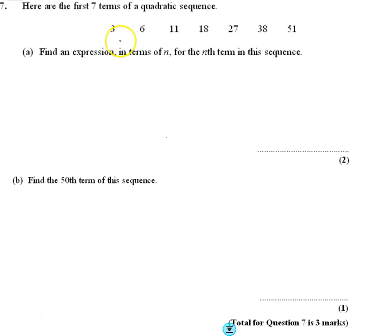Question number 7. Here we've got a quadratic sequence, so we've got to find an expression in terms of n for the nth term of the sequence.